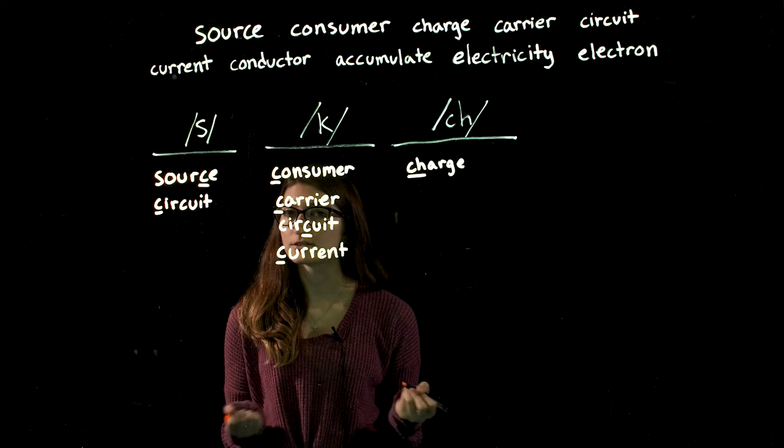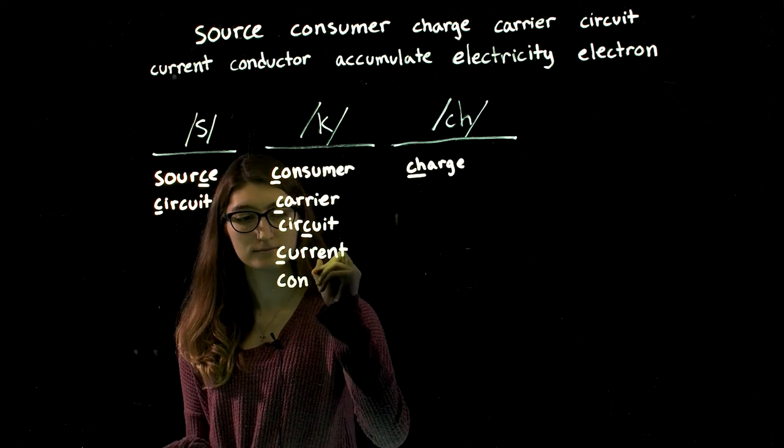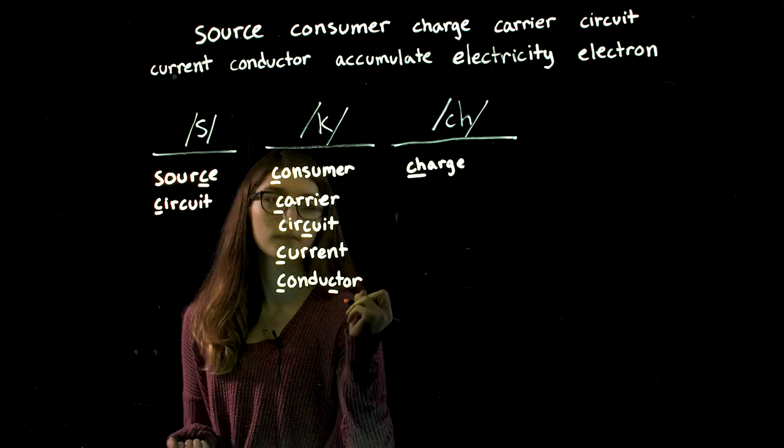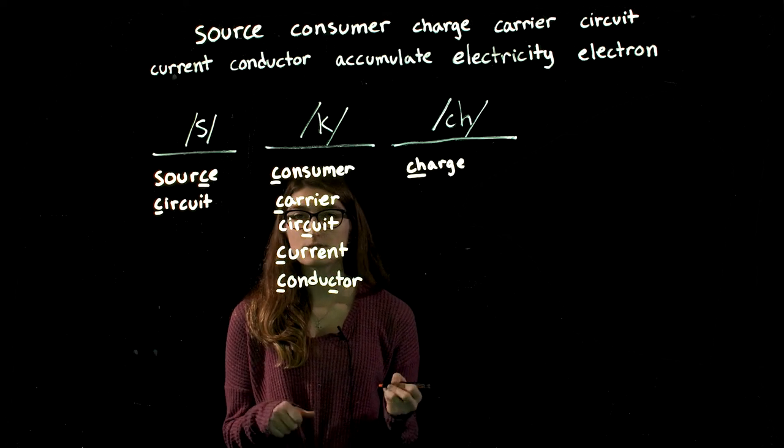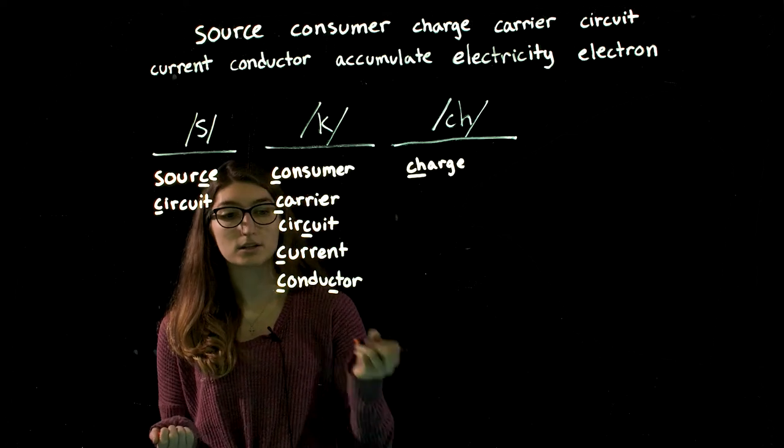Conductor has two Cs, which both make the K sound. Accumulate has two Cs next to each other, combined make the K sound.